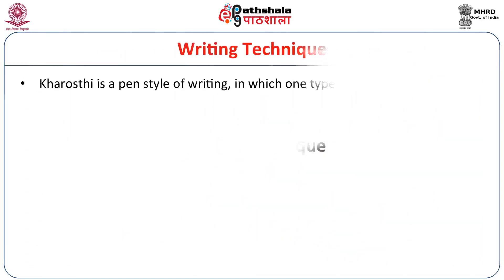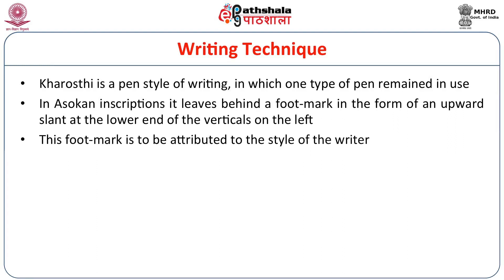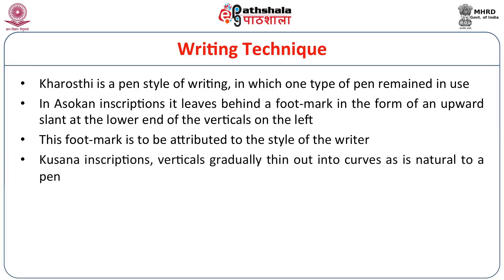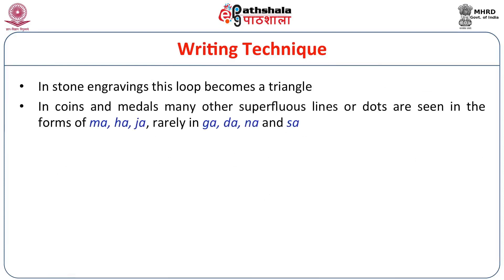Kharosthi is a pen style of writing in which one type of pen remained in use. In Ashokan inscriptions it leaves a footmark in the form of an upward slant at the lower end of the verticals on the left — a footmark attributable to the style of the writer, not the engraver. In Kushana inscriptions, the verticals gradually thin out into curves as is natural to a pen, and the medial 'U' assumes the form of a loop. In stone engravings, loops become triangles. On coins and medals, many superfluous lines or dots appear in letters like 'Ma', 'Ha', 'Ja', 'Ga', 'Da', and 'Na'.